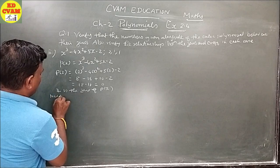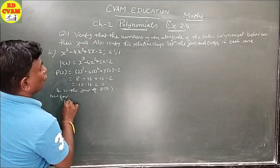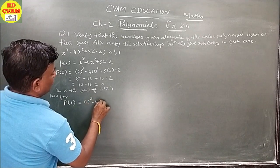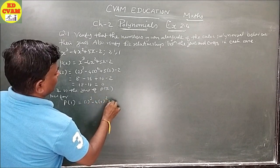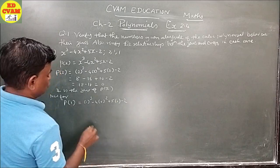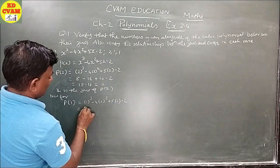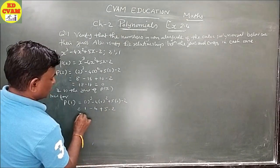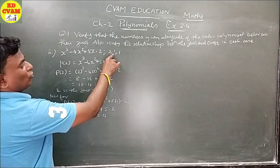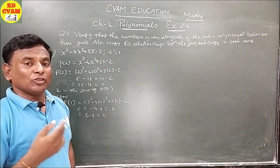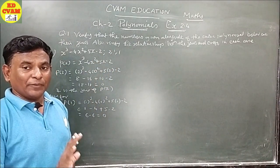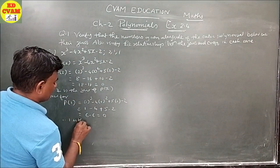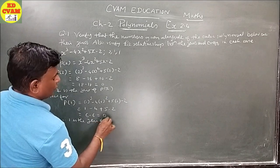For P(1): (1)³ - 4(1)² + 5(1) - 2 = 1 - 4 + 5 - 2 = 6 - 6 = 0. The zeros 1 appears twice in the given list, and once one zero is proved the other 1 is also verified. Therefore 1 is a zero of P(X).